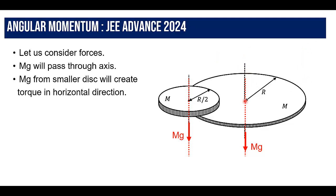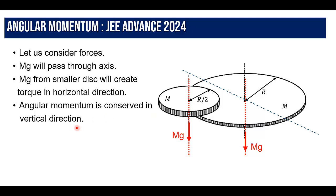If we want to conserve angular momentum about the vertical axis, this mg passes through the axis, so there is no torque from it. The mg of the smaller disc creates a torque at distance r, but this torque is not in the vertical direction — it is in the horizontal direction. So there is no torque acting in the vertical direction.